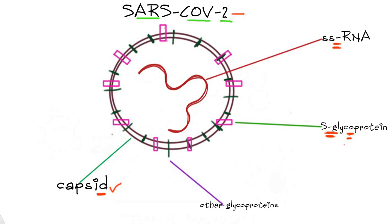After the capsid, we have the genome of the virus inside. The genome of coronavirus, or SARS-CoV-2, is single-stranded RNA. That is all about the virus structure you need to know.